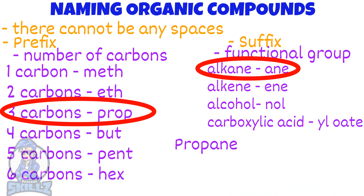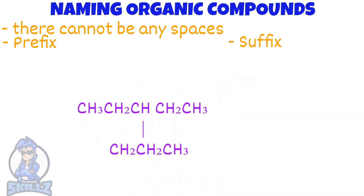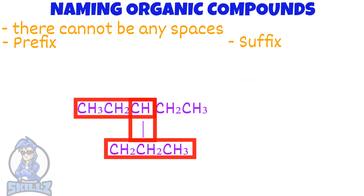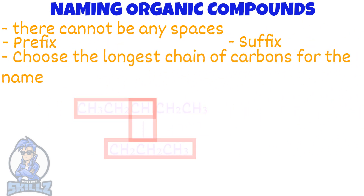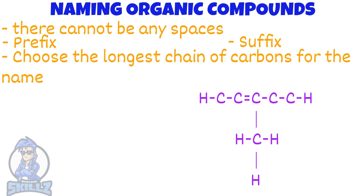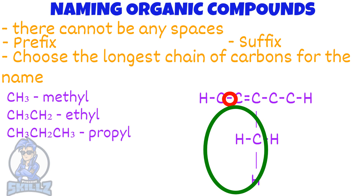Next, there's the problem of branch chains in one compound. If so, the longest chain is the one that should be chosen for the name. In this case, 6, not 5. Here's the displayed formula for a molecule. When naming this, you will have to include the place where the double bond is and where the branch is. With regards to the branch, since this is a CH3 structure, we would call it methyl.